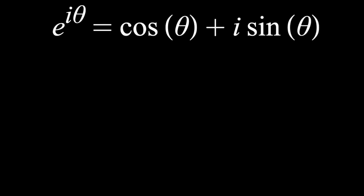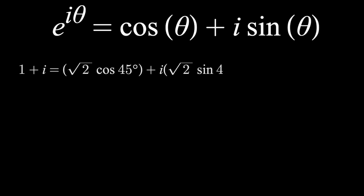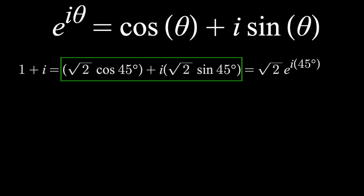Now the first reason this formula is amazing is that it allows us to write any complex number in exponential form. I'm not going to go into the visuals of this, but as a numerical example, if you take the complex number 1 plus 1i, you can write that as root 2 cosine of 45 degrees plus i times root 2 sine of 45 degrees. And this can be rewritten in exponential form according to Euler's formula. All that matters here is the fact that there's always a way to write a complex number in this format, which can then be rewritten in exponential form.